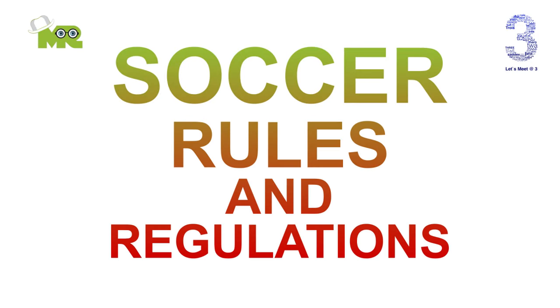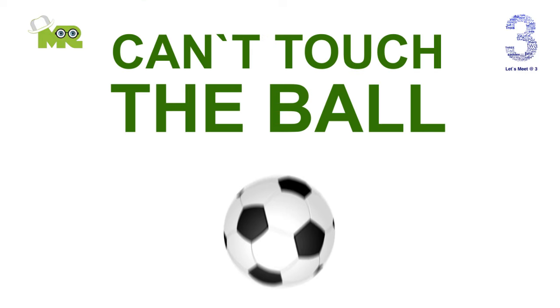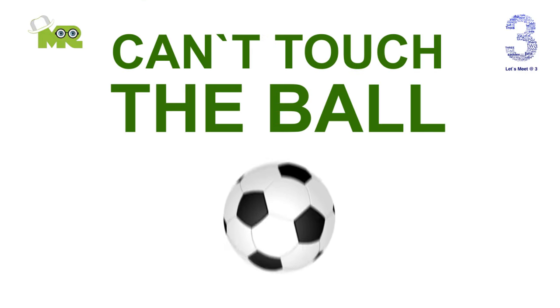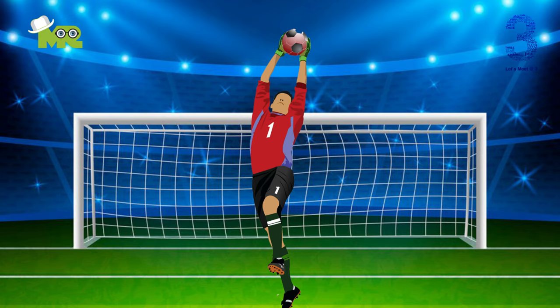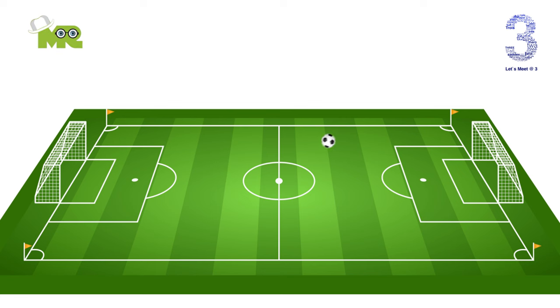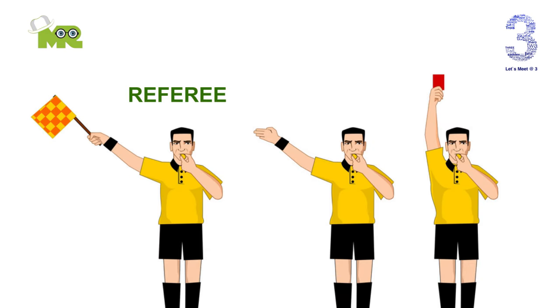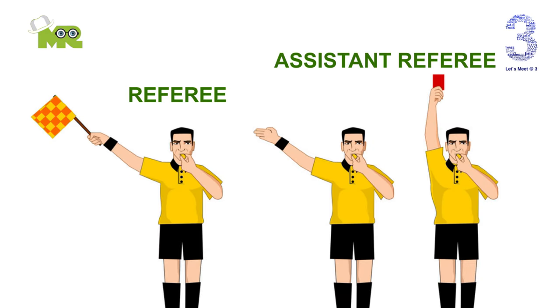The rules of soccer are fairly simple. You cannot touch the ball with your hands or arms intentionally unless you are the goalie. The whole ball must cross the goal line for it to constitute as a goal. Each game must include one referee and two assistant referees.